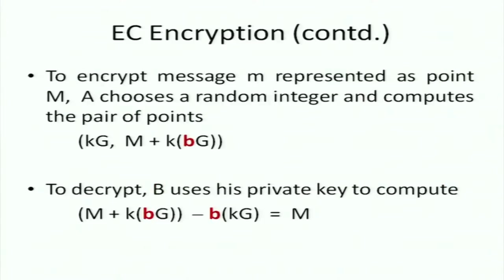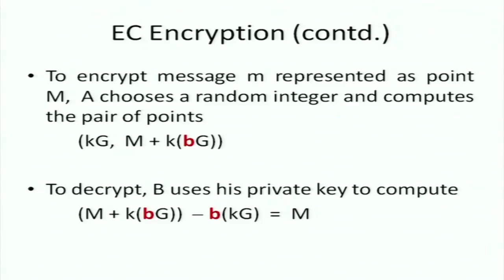We can think about how to do encryption with elliptic curves — just take El Gamal and apply it here, very similar. Given a message M represented as a point M, A chooses a random integer k and computes the pair of points: k·G and M + k·(B·G), where B·G is B's public key and k is the random integer. This gives two pieces of ciphertext — exactly analogous to El Gamal but on a different field.